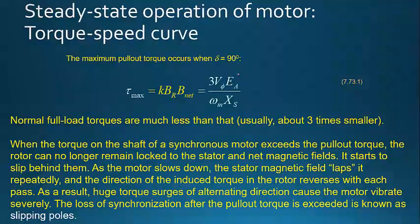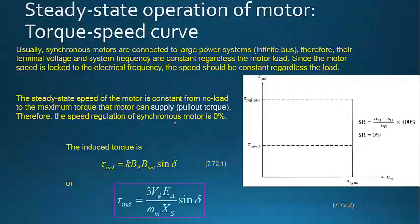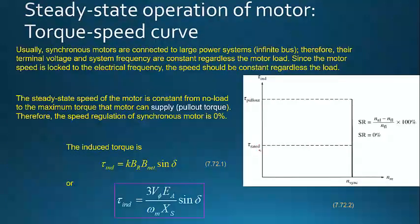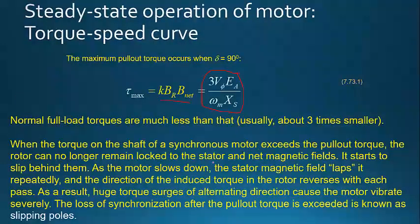So the maximum pullout torque occurs when delta equals 90 degrees, where sine 90 equals one. The formula then reduces to its simplified form — for the magnetic case that is k times B_R times B_net. The normal full-load torque is much less than the pullout torque, and as mentioned, the pullout torque is typically about three times the rated torque.